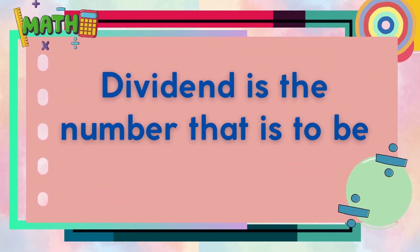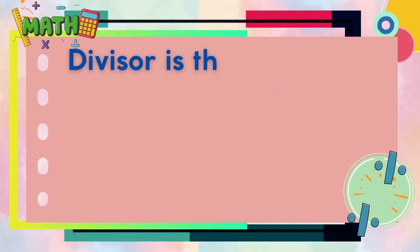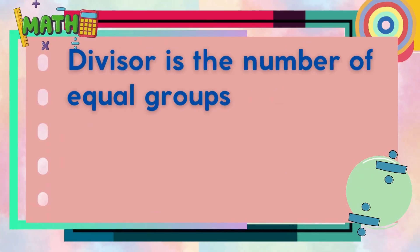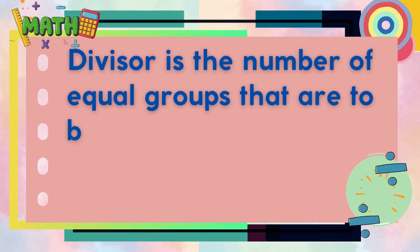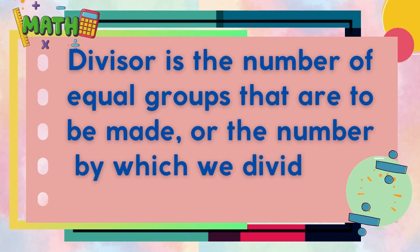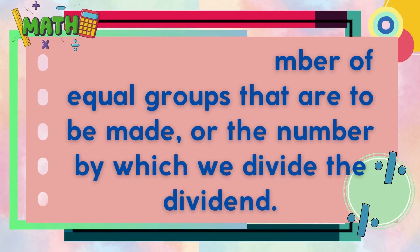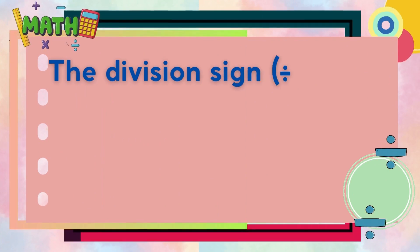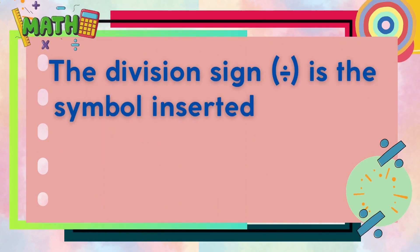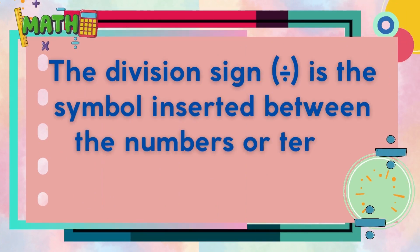The dividend is the number that is to be divided. The divisor is the number of equal groups to be made, or the number by which we divide the dividend. The division sign is the symbol inserted between the numbers or terms being divided.